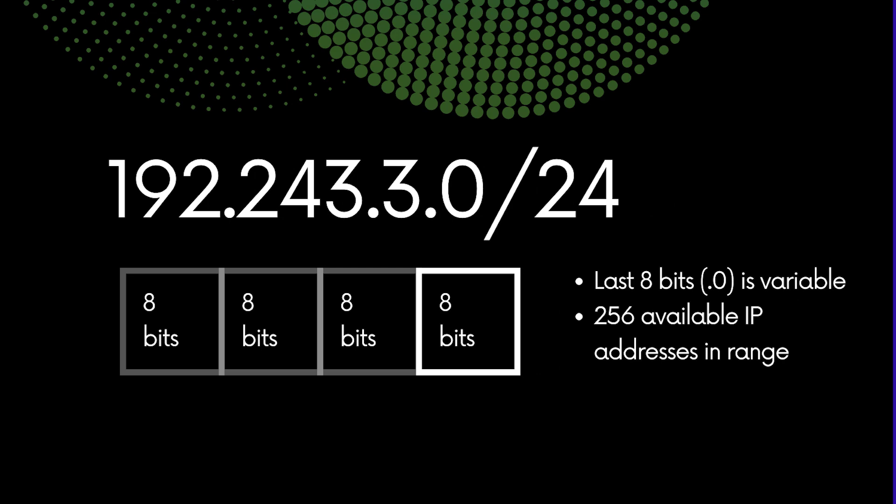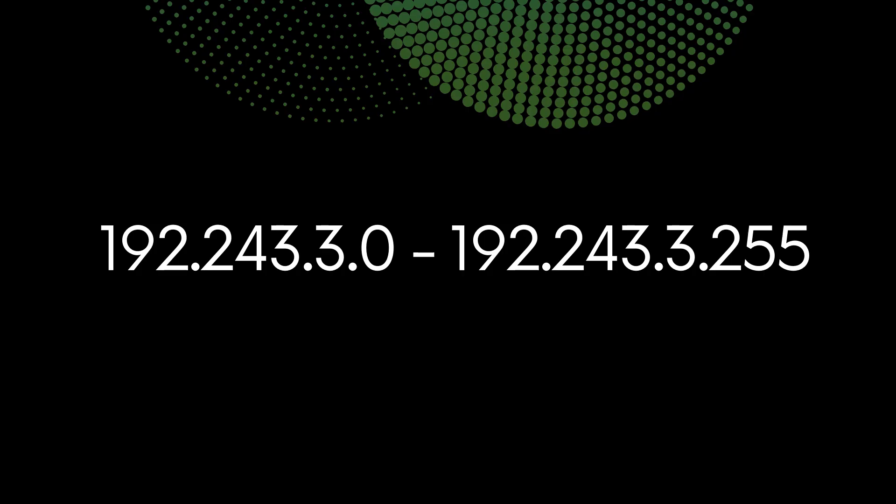Remember, if we add up all those binary values for those 8 bits, we get 256. Usable addresses range from 0 to 255, meaning 256 IP addresses are available in total, ranging from 192.243.3.0 all the way up to 192.243.3.255.